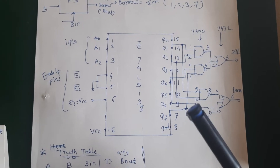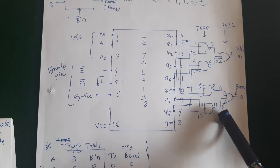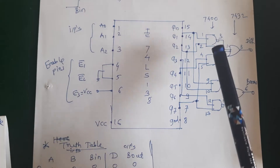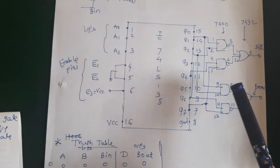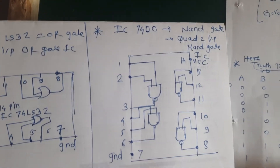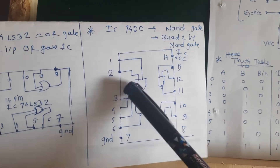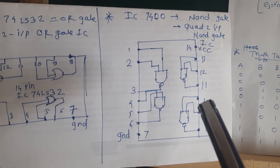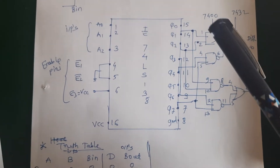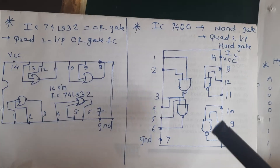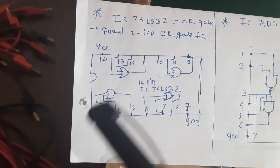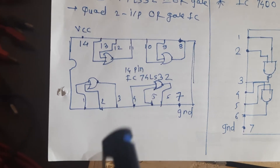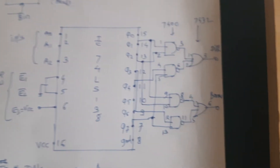7400 is the 2-input NAND gate IC and 7432 is the 2-input OR gate IC. In the IC7400 we have 4 two-input NAND gates, and for our realization of the full subtractor we also need those 4 NAND gates. For 7432, which is also a 2-input OR gate IC, we can get 4 OR gates. The pin configuration is: pins 1 and 2 are input, 3 is output; pins 4 and 5 input, 6 is output. I have used 2 OR gates here.